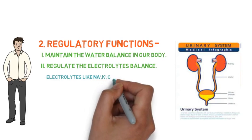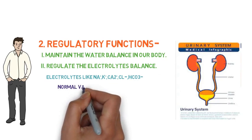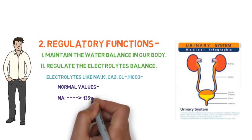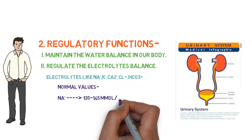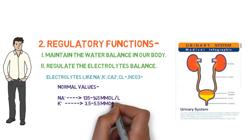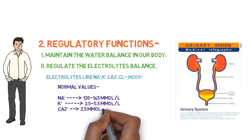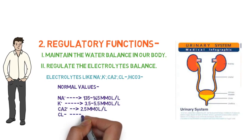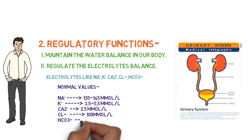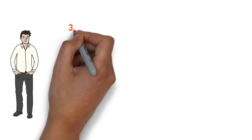Different types of electrolytes — like sodium, potassium, calcium, chloride, and bicarbonate — are regulated by the kidney. Normal values: sodium ion is 135 to 145 mmol/L, potassium ion is 3.5 to 5.5 mmol/L, calcium ion is generally 2.5 mmol/L, chloride ion is 100 mmol/L, and bicarbonate ion is 22 to 28 mmol/L.